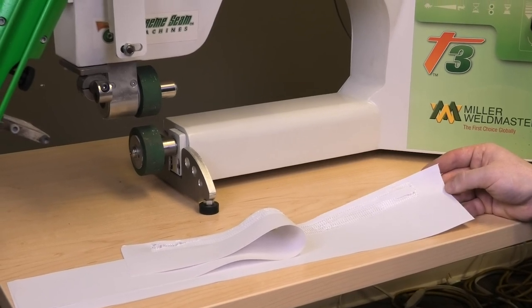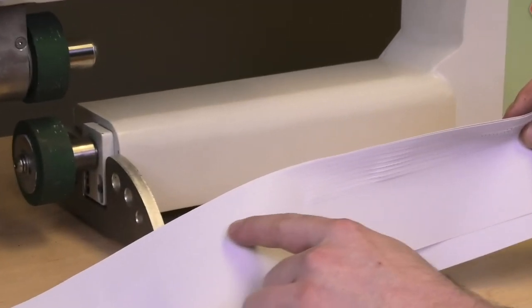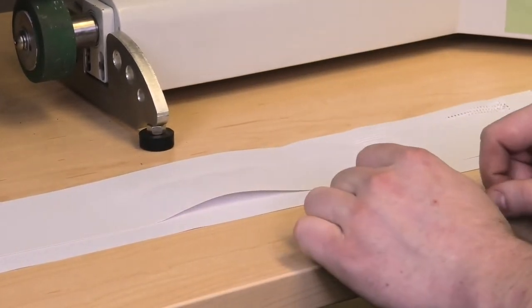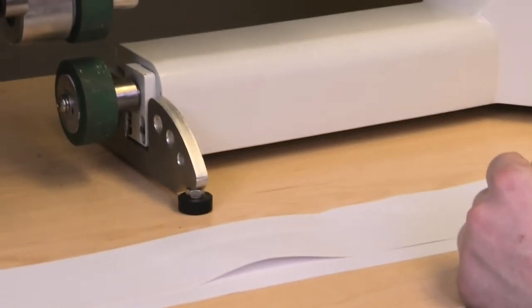If you are getting too much of a weld, you might start seeing some wrinkles, and it will be hard for the operator to control the material. You might want to back that wedge out a little bit.